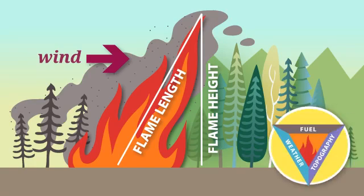All legs of the fire environment triangle can influence the flame height. For example, one would expect high flame lengths on steep slopes with tall vegetation, high wind, and low relative humidity.